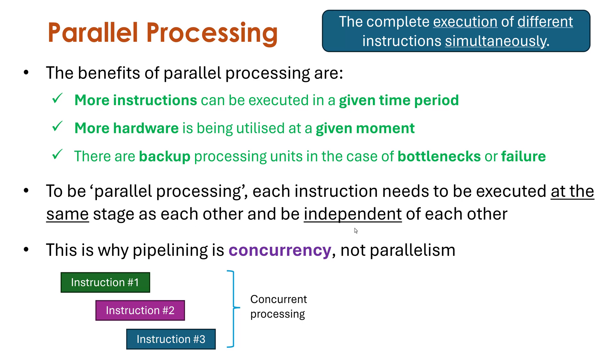Are they independent of each other? No. Because instruction two is waiting for instruction one to finish. Instruction three is waiting for instruction two to finish. So they're not independent. Whereas if we had three instructions starting at the same time, ending at the same time, and they could all work independent of each other, that is true parallel processing.